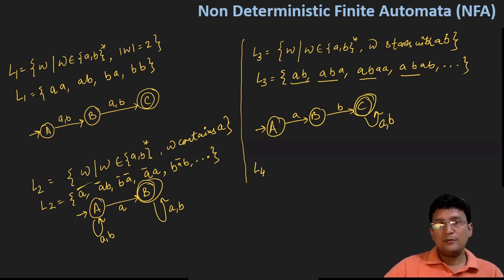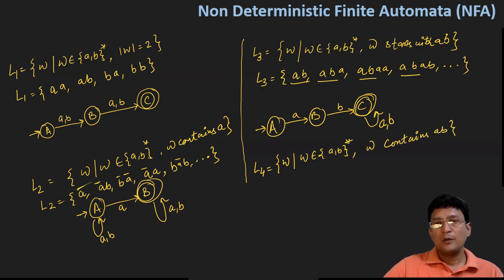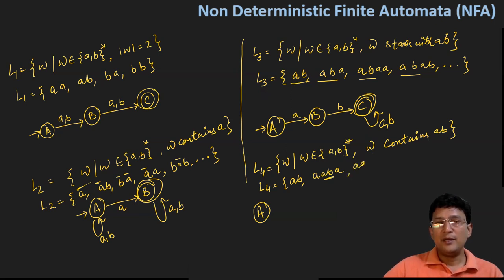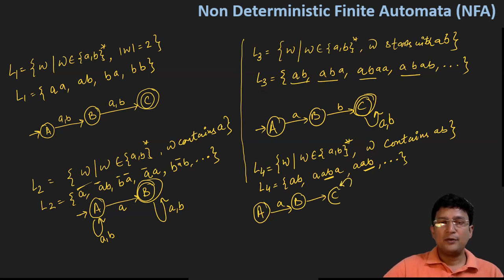Now let's draw an NFA for W where W is an element of {A,B}* and W contains AB as a substring. AB can appear at any place — in between, or at the end. The smallest string that should be accepted is AB. AB can appear in between, like AAB, or at the end. So I should first draw the NFA for the smallest string AB.